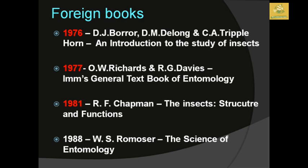Some important foreign book references: In 1976, J.D. Borror, D.M. Delong, and C.A. Triplehorn published An Introduction to the Study of Insects. In 1977, O.W. Richards and R.G. Davies published a general textbook of entomology. In 1984, R.F. Chapman published The Insects: Structure and Function. In 1988, W.S. Romoser published The Science of Entomology.